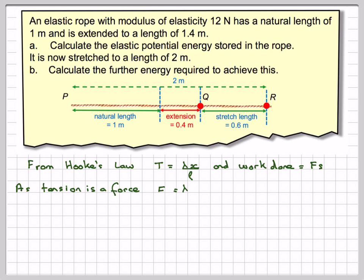So as tension is a force, we're going to have that force is lambda x divided by L. Then the work done will extend a small distance of a little bit of x, which is called delta x. This is F times delta x, which will be equal to the force, which is now lambda x over L times a little bit of x, delta x.